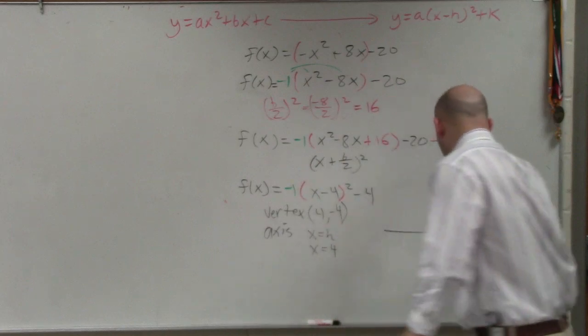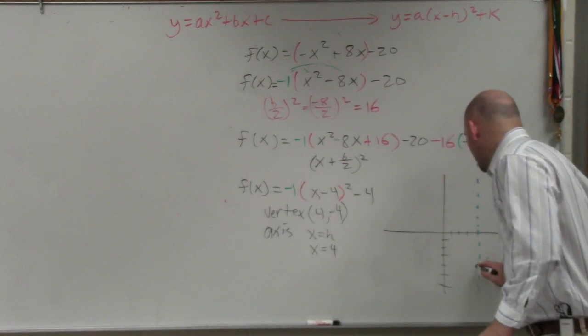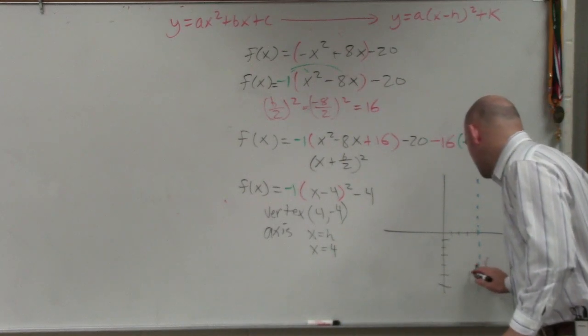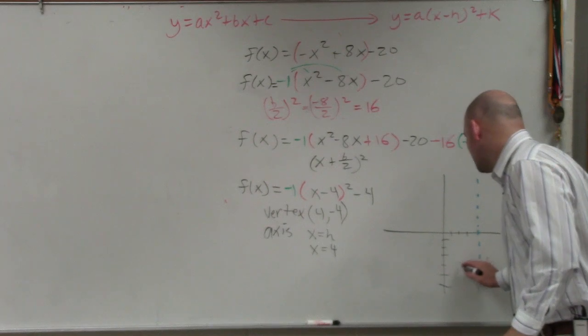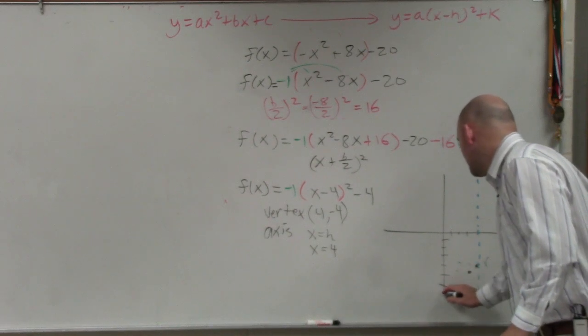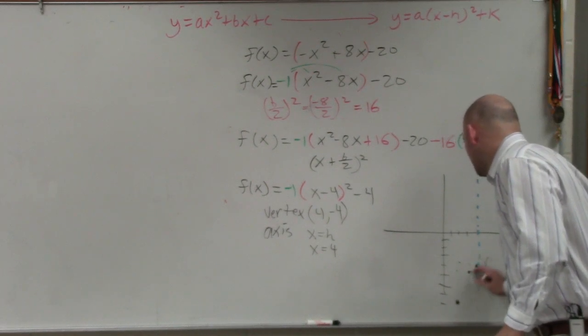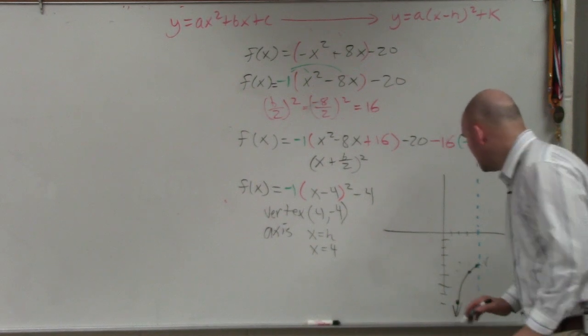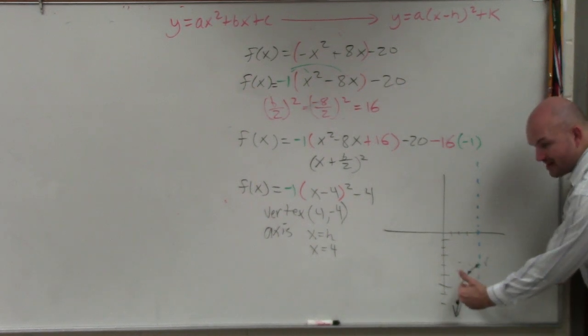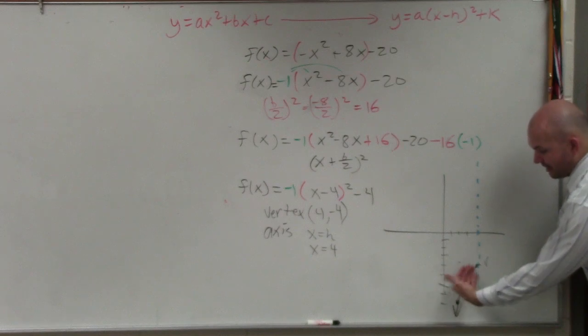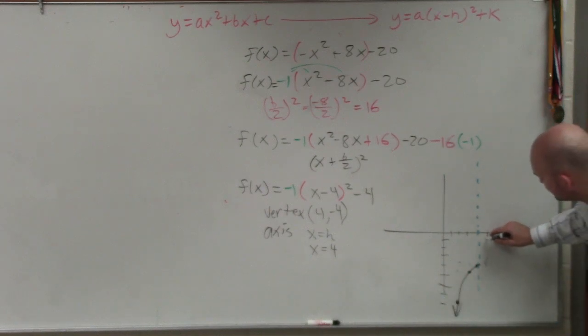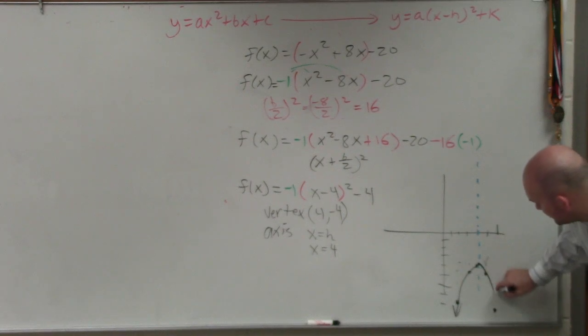now that's going to be going down. So you go, so from this point, it's going to go over 1, down 1, over 2, down 4, 1, 2, 3, 4. And then, as I mentioned, whatever's on the left side of the graph, you can just reflect those points over to the other side using the axis of symmetry.